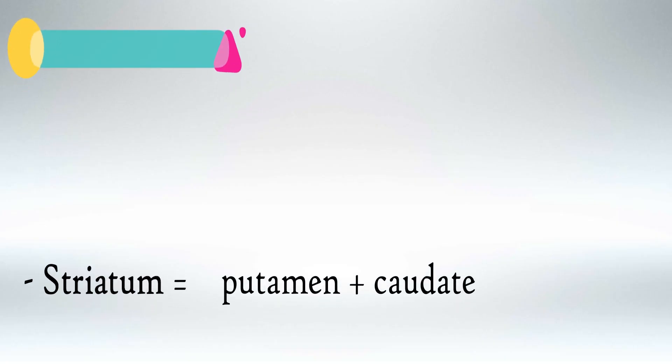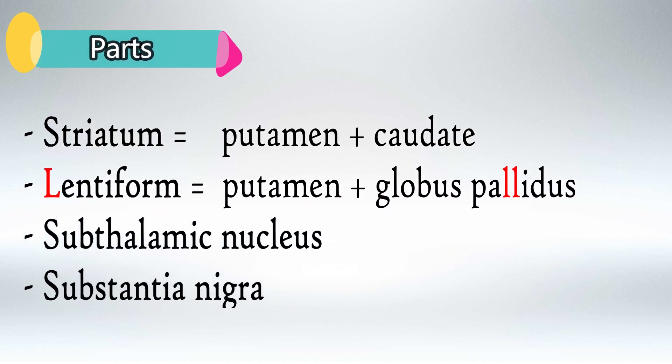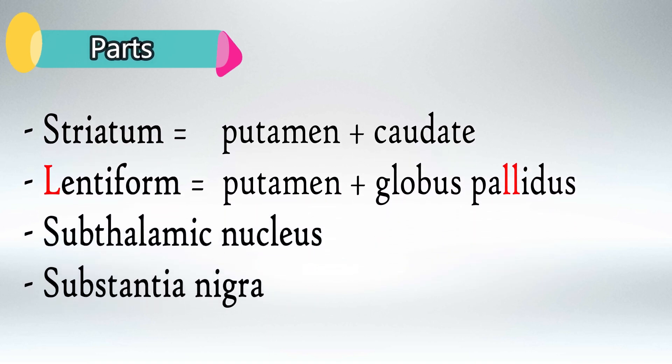If you were ever asked about the parts of the basal ganglia, you'll find the answer on this page. The basal ganglia is formed by the striatum, which is the putamen and caudate, and also the lentiform, which is the putamen and globus pallidus, and also the subthalamic nucleus and substantia nigra. These are the parts that make up the basal ganglia.